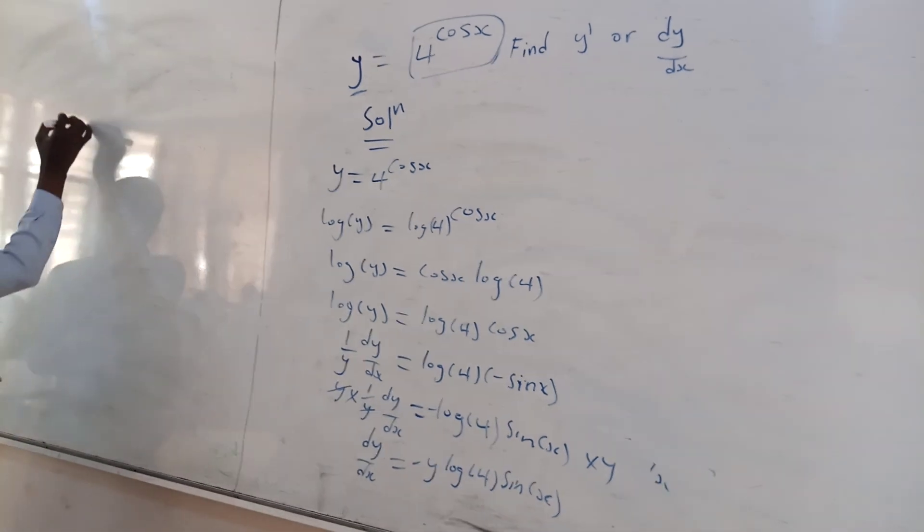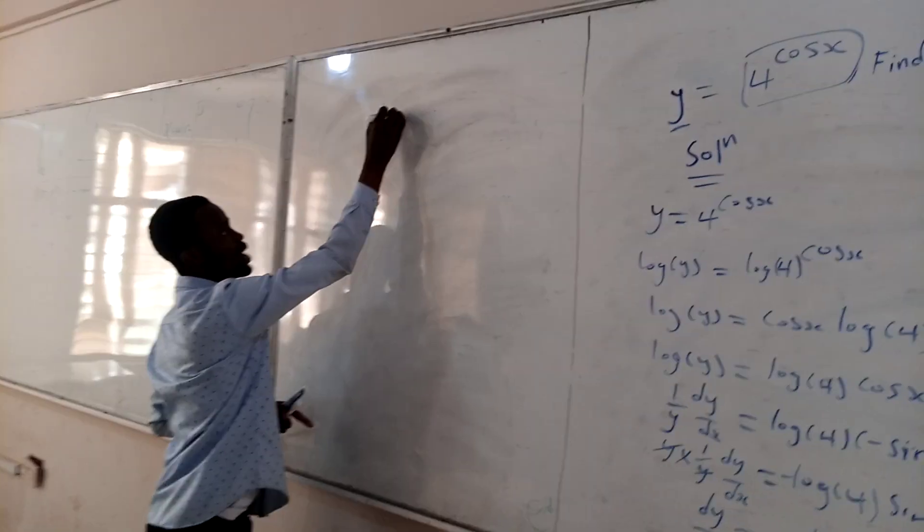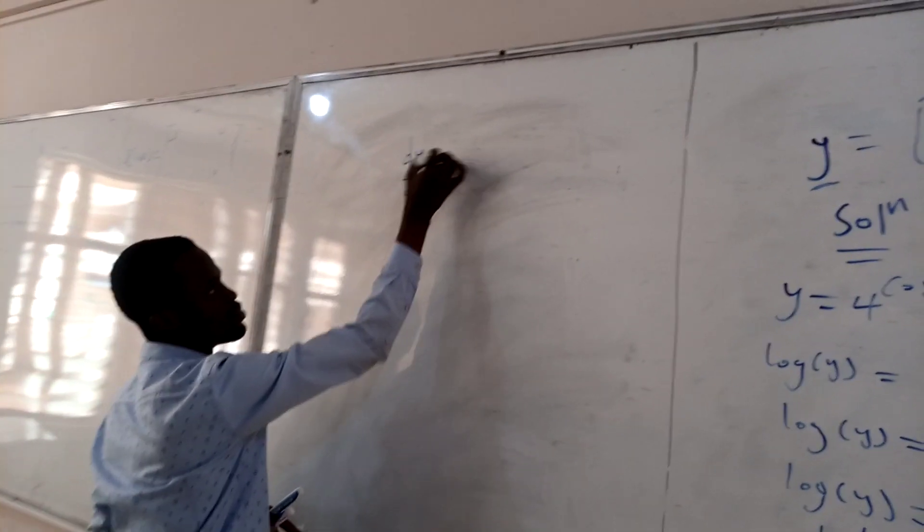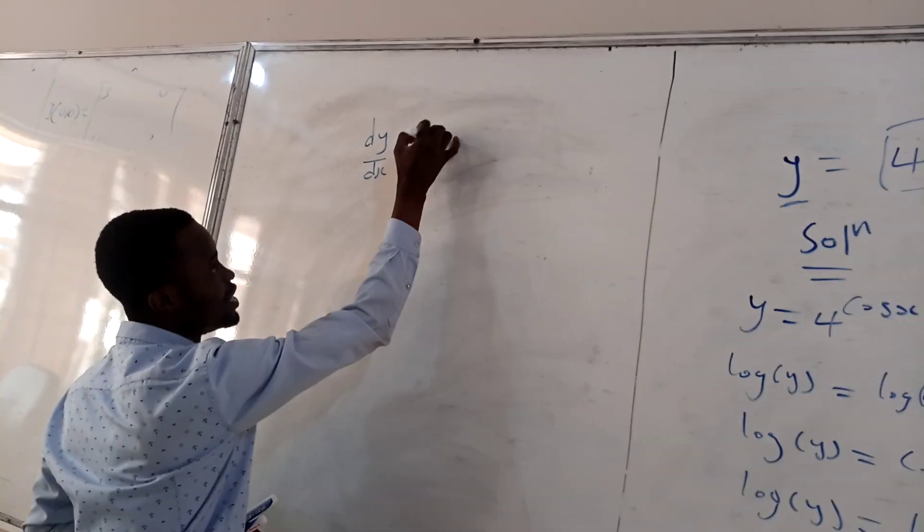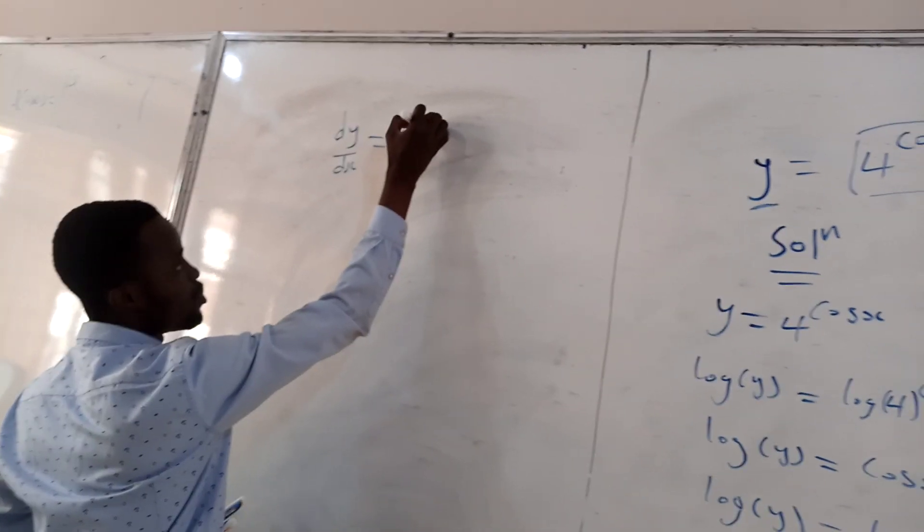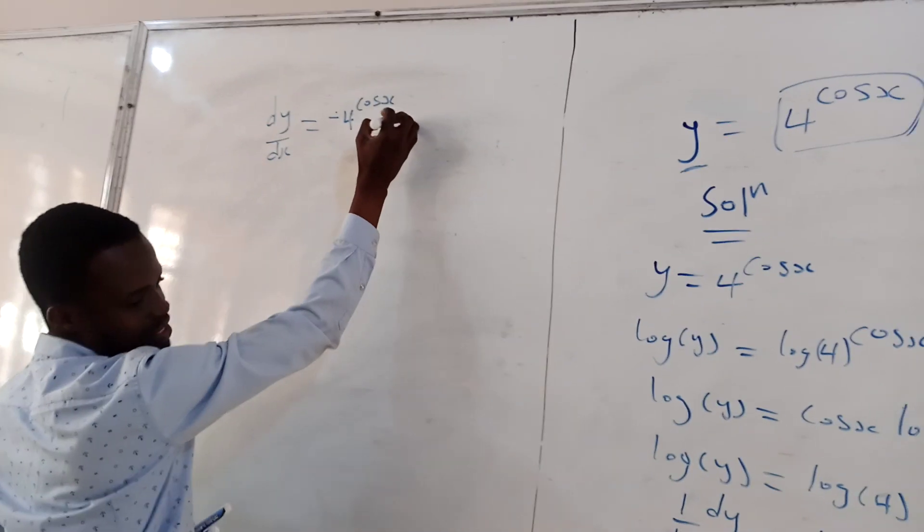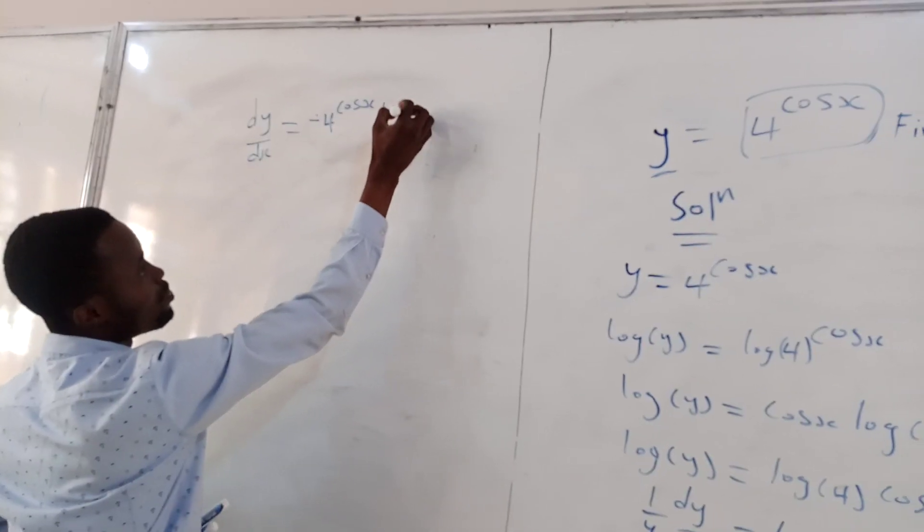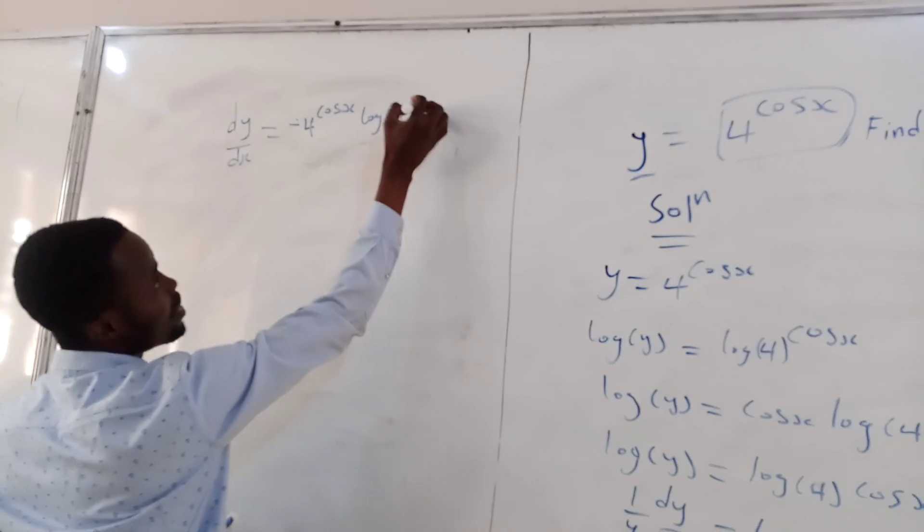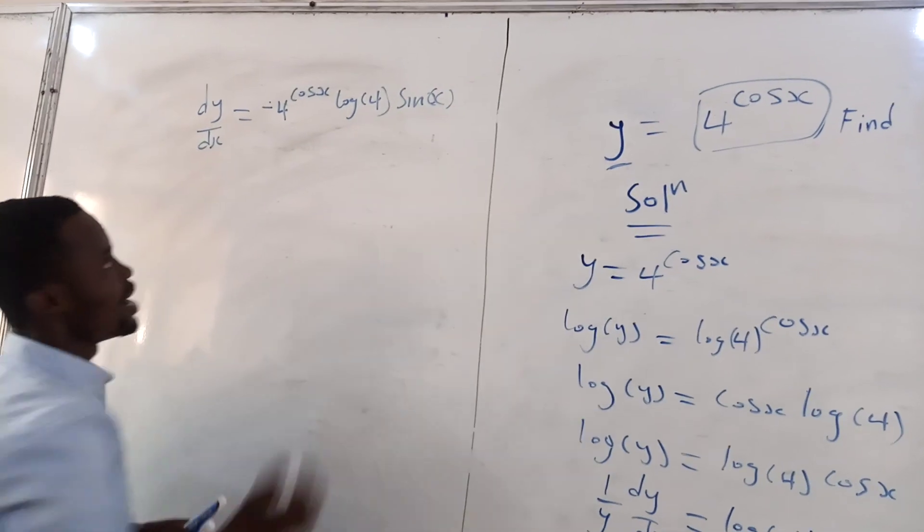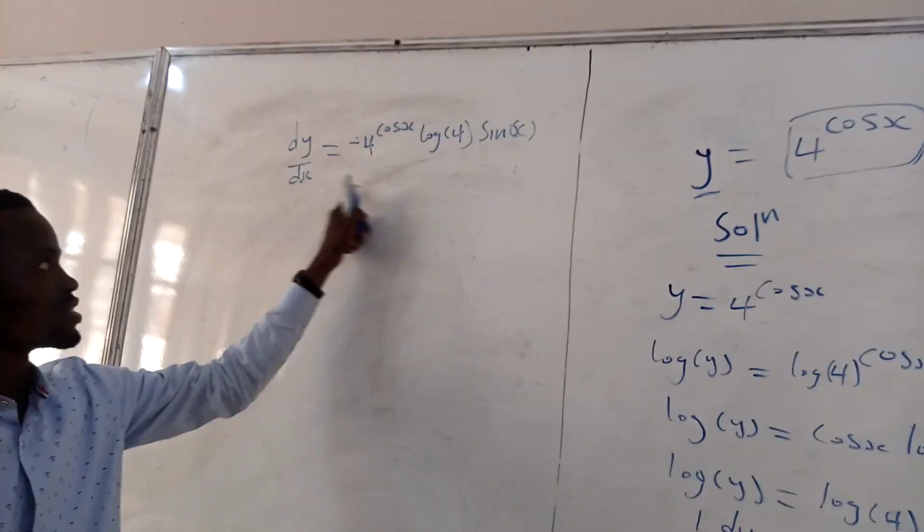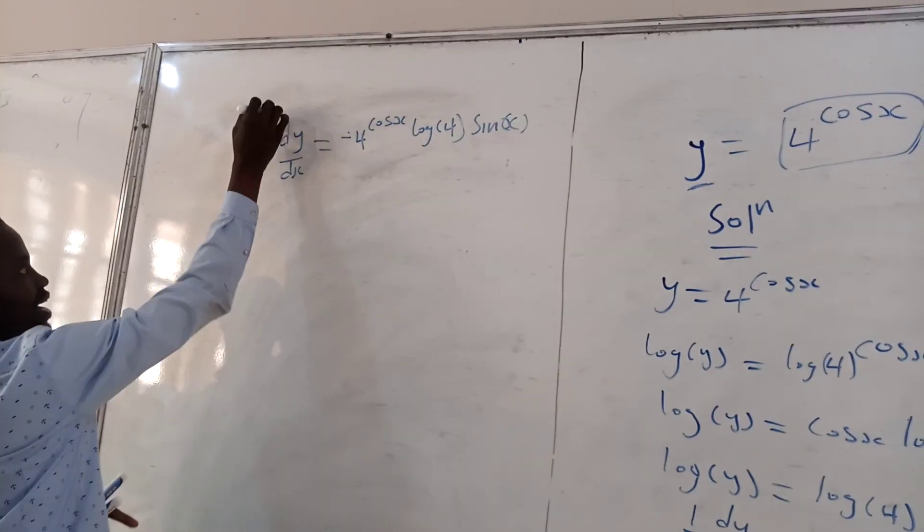So let's come back to this. So we are going to get dy dx, which is equal to negative 4 raised to the power of cos x, times log 4, sin x. And this is the final answer for everything we are doing. So this is the final answer.